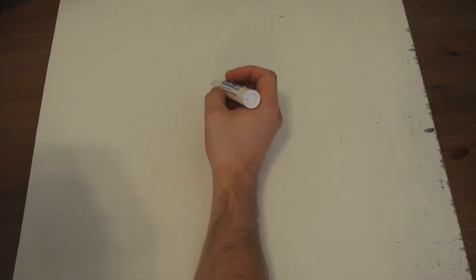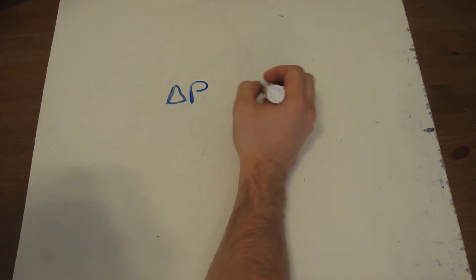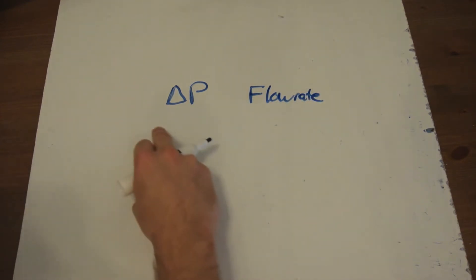Well if we remember back to Bernoulli, we can say that there's going to be a relationship between the delta P and the flow rate of the fluid in the pipe and the relationship between those two is going to be a square root relationship.